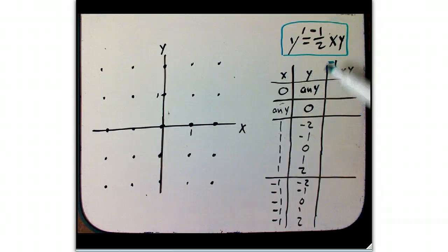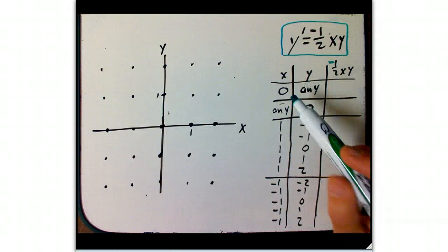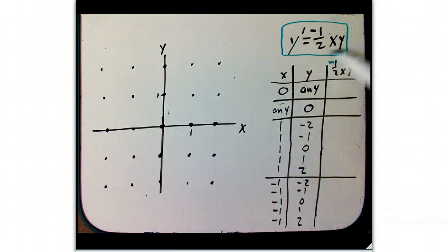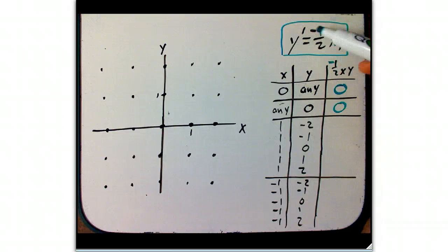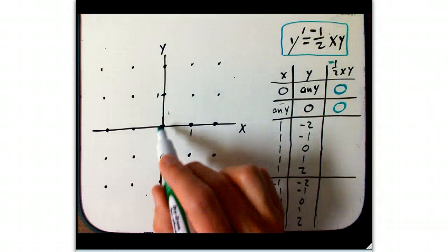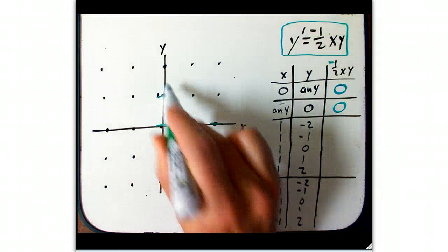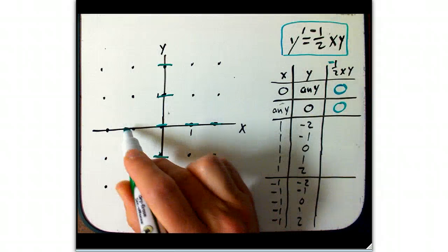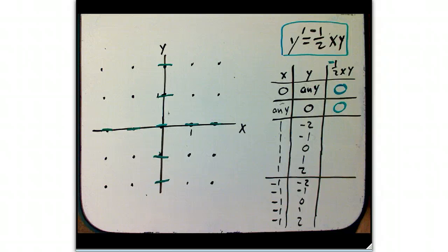Now one of the things nice about this equation is that if x equals 0, this expression gives you 0, no matter what y is. And the same is true if y is 0, these are all 0. What does that mean? Remember what these numbers are supposed to mean. They're supposed to be values for y prime. Those are slopes, and so I put them in as little slope elements. And so I've already got a bunch of slopes.